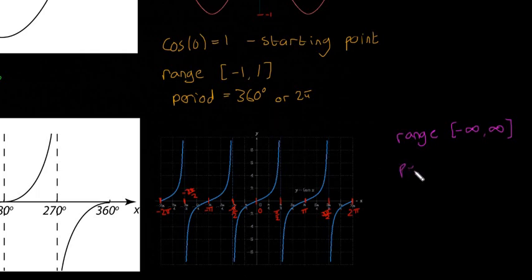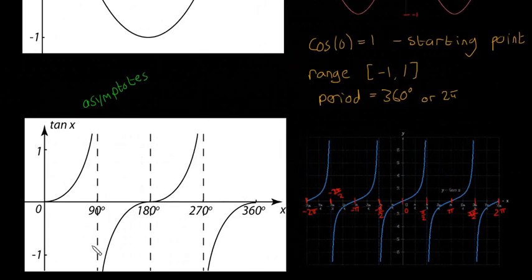And then the period, this is the one that you do have to know. The range isn't so important. It's equal to 180 degrees or pi radians. That's the important bit. That instead of like the other ones, they repeat every 360 degrees or 2 pi radians. Tan repeats every pi radians or 180 degrees. You see there that it repeats itself every 180 degrees.